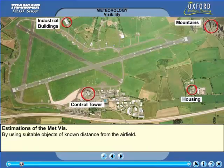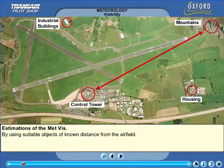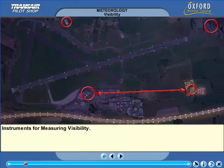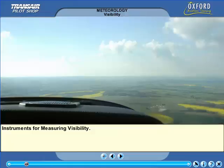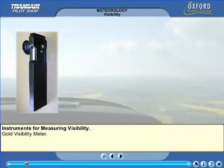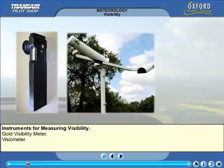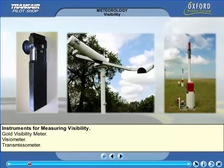It is relatively simple to estimate visibility. By day, reference is made to suitable objects at known distances from the observing point, perhaps a hill or a building, such as a church or a factory chimney. At night, it is more difficult. The observer uses lights, a glow from an urban area or perhaps an outline of a hill to distinguish the visibility. There are also several instruments that can be used to measure visibility more accurately. These are the gold visibility meter, the visiometer and the transmissometer.